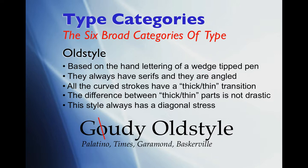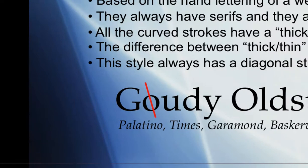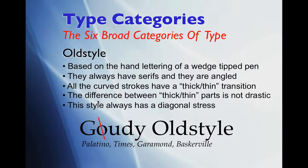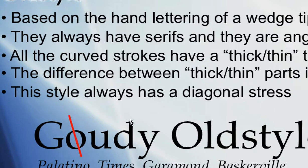Old Style lettering always has serifs. The serifs are these little feet that are at the top and bottoms of most of the letters in the type style. We always have serifs, and notice that they are always at a slight angle — that is standard with these type of fonts. It's at a slight angle, not straight across, as you'll see some of them are.